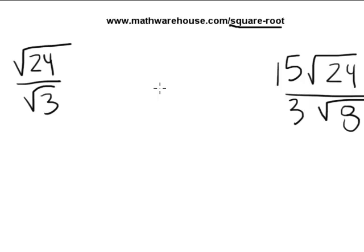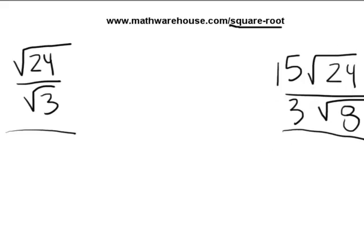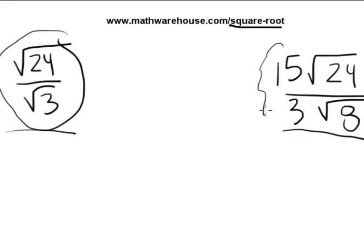The goal of this tutorial is to be able to solve problems like the two that you see on the screen: the square root of 24 over the square root of 3, or something like 15 times the square root of 24 over 3 times the square root of 8. We'll work on problems like the one on the left at the beginning and wrap up with the more complicated ones.